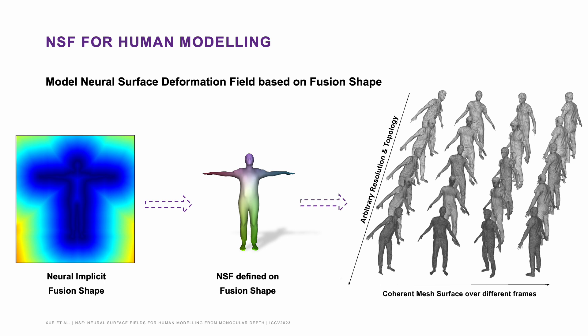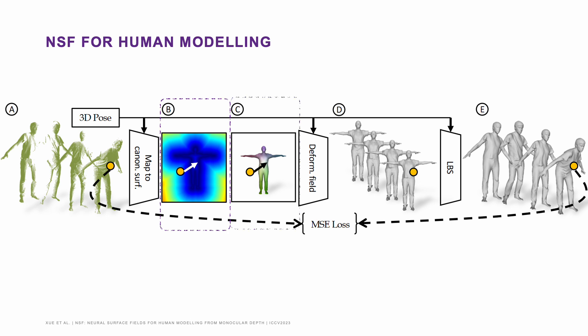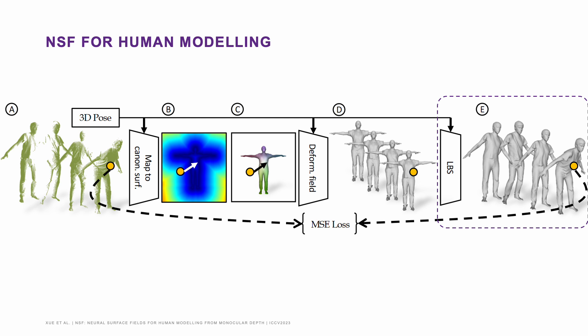Here, we build a neural surface deformation field which predicts a pose-dependent deformation on the surface. After training, our NSF can reconstruct meshes at arbitrary resolution with temporal consistency. Here is the full pipeline: we start from canonicalizing points, learn the implicit fusion shape, define the neural surface field, learn surface deformation, and repose to provide cycle consistency self-supervision.